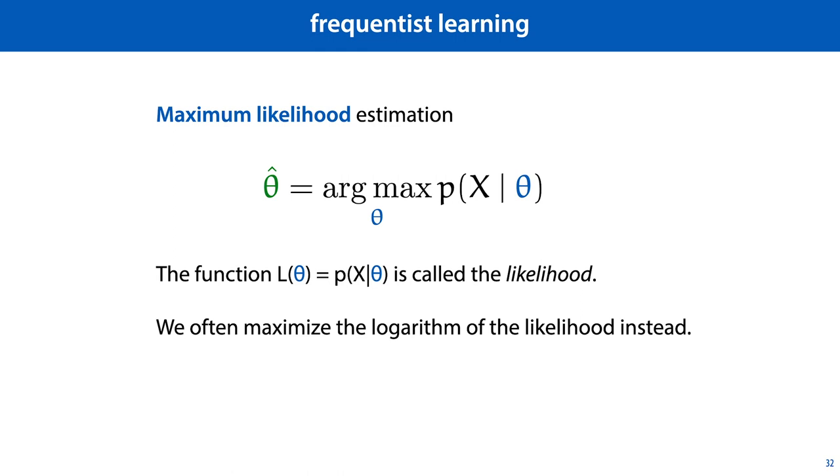And this is the function that we want to maximize in maximum likelihood estimation. Technically, it is often easier to take the logarithm of the likelihood, which we call the log likelihood. Since the logarithm is a monotonic function, taking the logarithm doesn't change the location of the optimum.